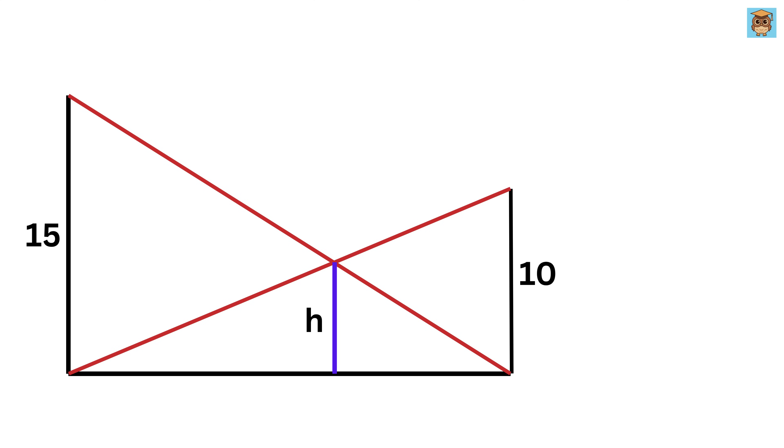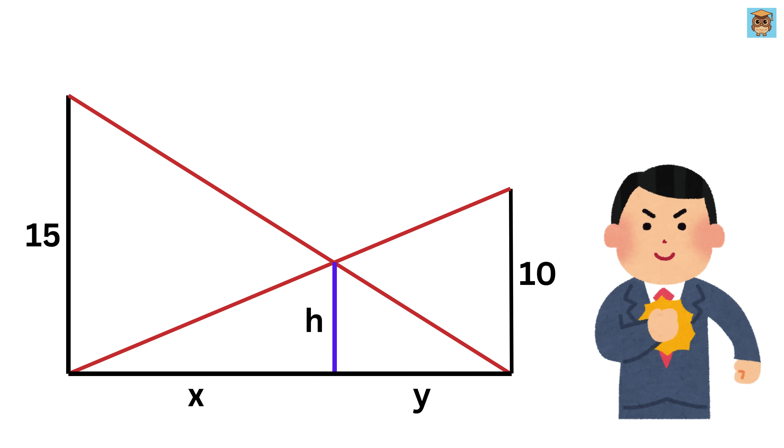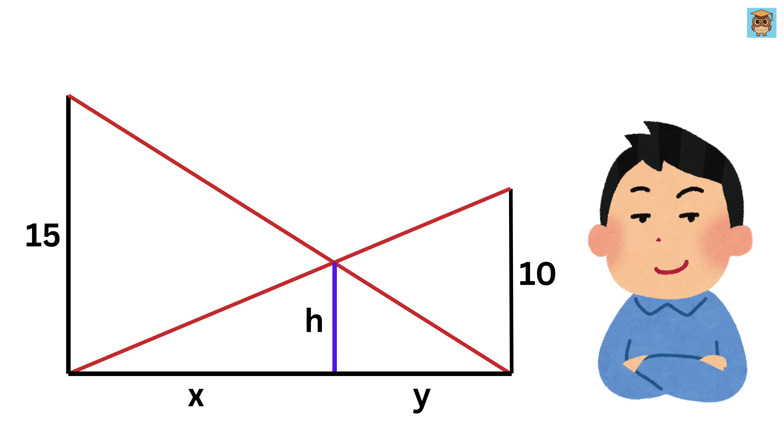Let us consider the horizontal distance between this pole and this point as some value, say X, and between this pole and this point as Y. We are not given the exact value of X or Y, but we will not need it, because later you will find out that they will cancel out in the process.